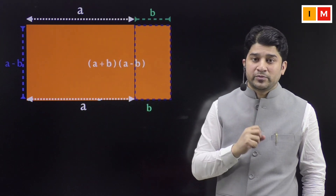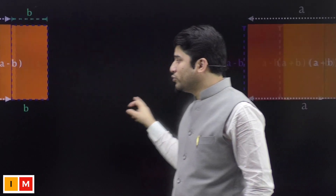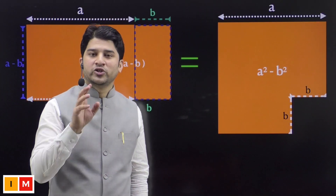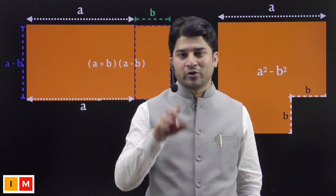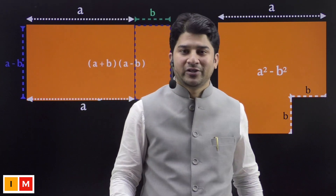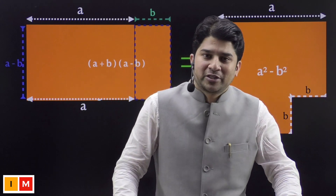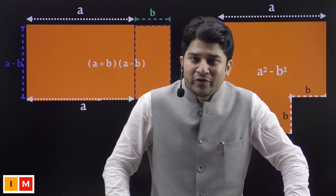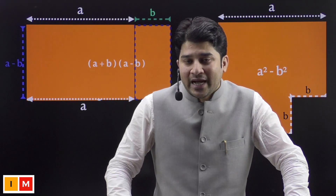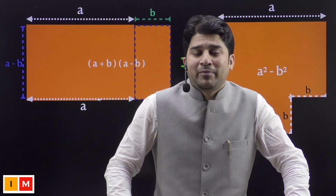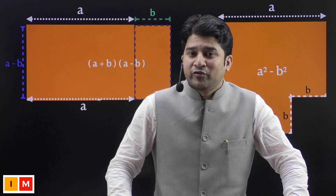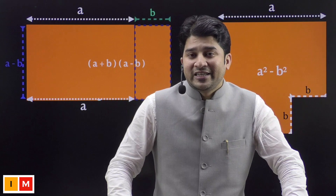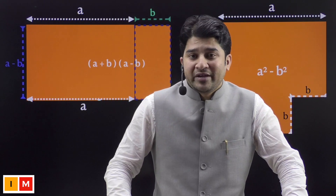If I ask you what is the dimension of this big rectangle, you are going to say it is (a + b) by (a - b), so the area of this big rectangle is (a + b)(a - b). This is equal to a² - b². So if anybody asks you what is a² - b², you can say it factors into (a + b)(a - b). This is an amazing identity with great applications in mathematics, and in our squares video we actually used this identity to square numbers very quickly.